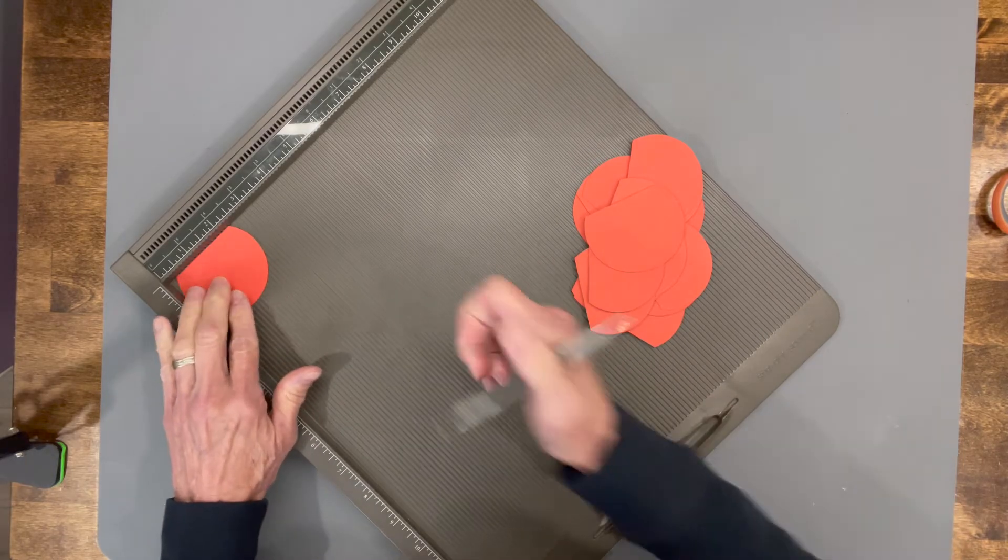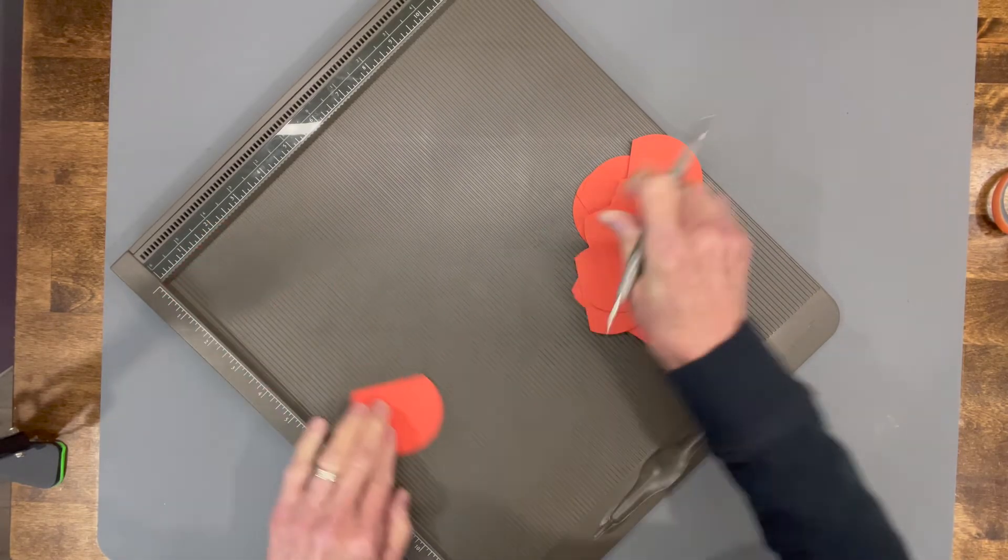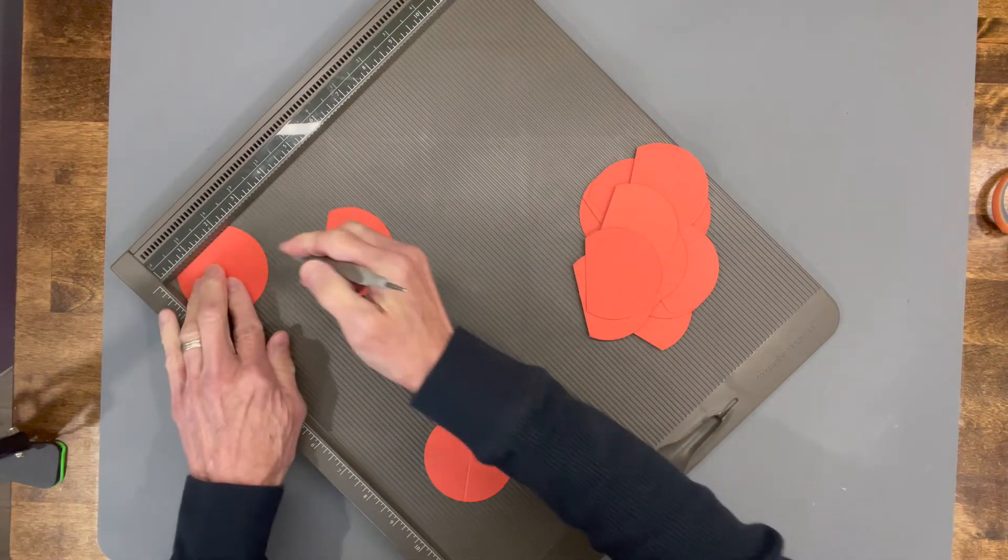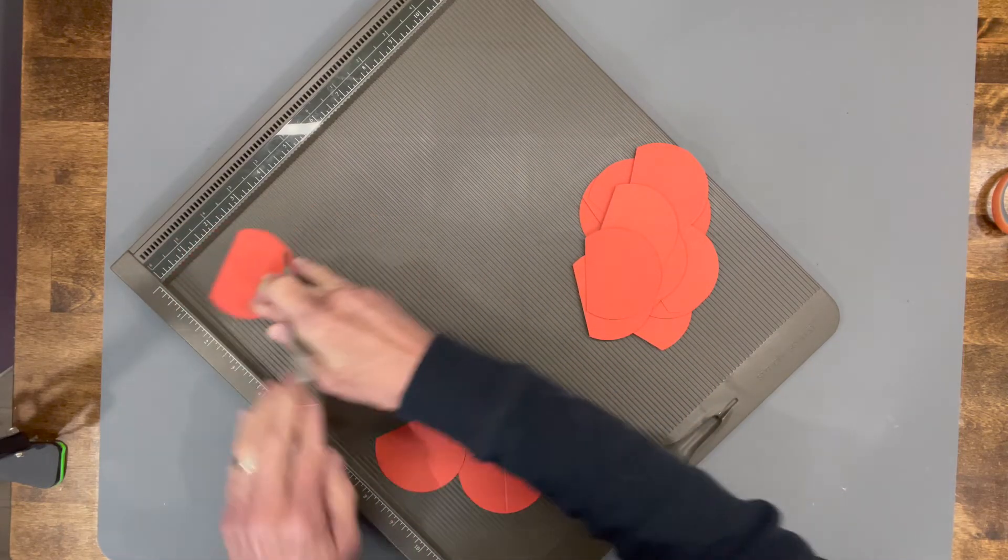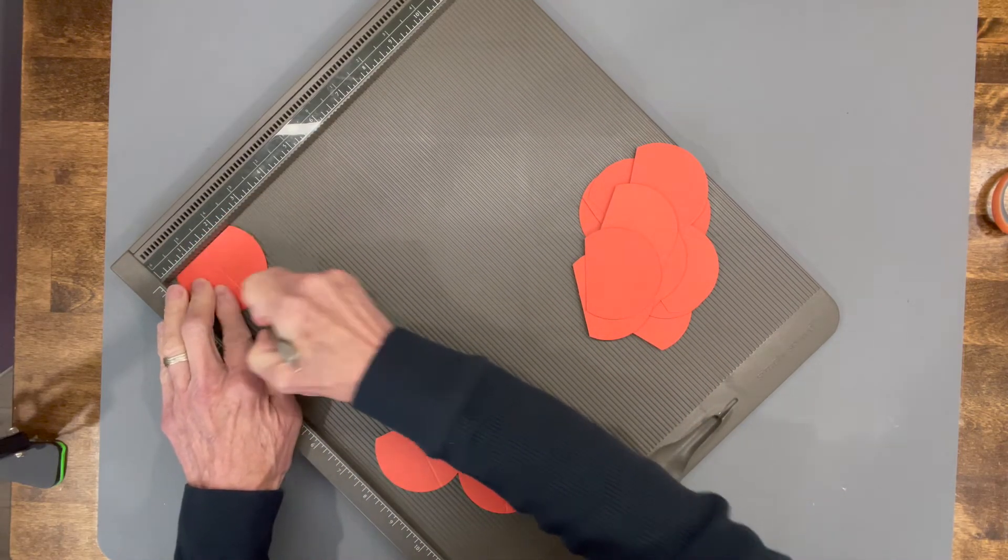Next I'm going to take a scoring board and put the flat part up against the top. I'm going to score each one of these at one and a quarter inches, and that's going to be exactly half of this circle.